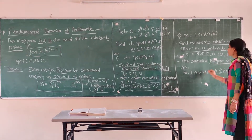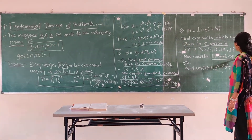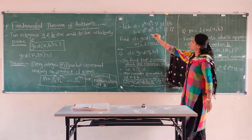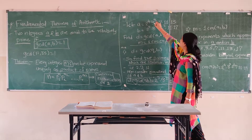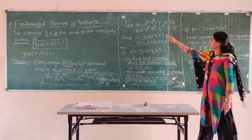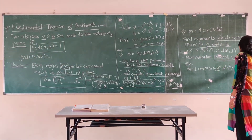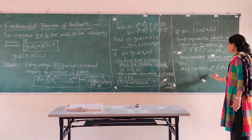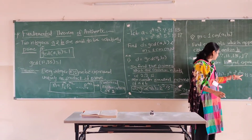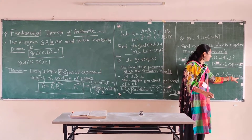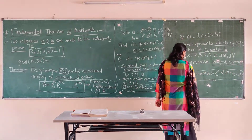For LCM we consider the largest exponent of each prime, whereas for GCD we considered the smallest. For 2: 2^4 vs 2^3, take 2^4. For 3: 3^3 vs 3^2, take 3^3. For 5: only in b as 5^2, so take 5^2. The remaining primes have exponent 1. Therefore LCM(a, b) = 2^4 · 3^3 · 5^2 · 7^1 · 11^1 · 13^1 · 17^1.